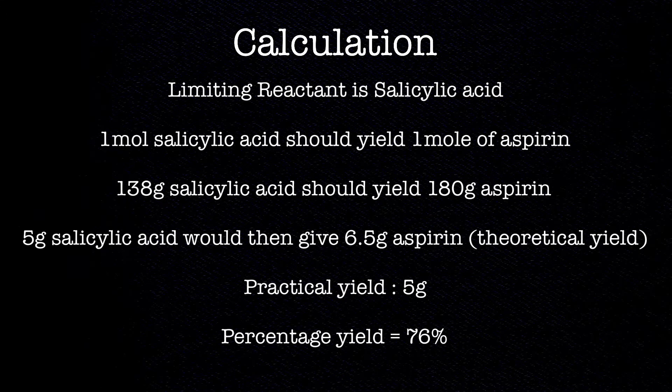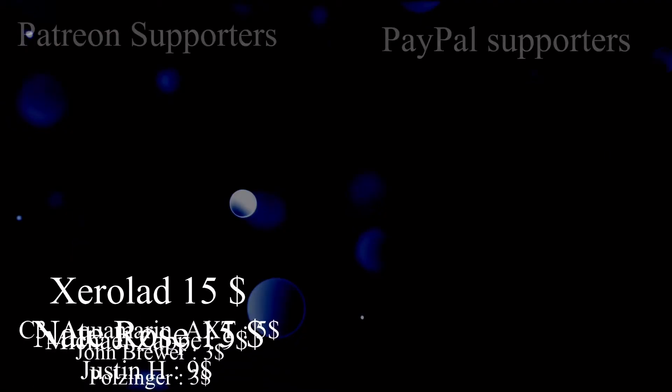5 grams of salicylic acid would then give 6.5 grams of aspirin, and this is the theoretical yield. The practical yield was 5 grams, so the percentage yield was 5 divided by 6.5 times 100, and that is 76%.